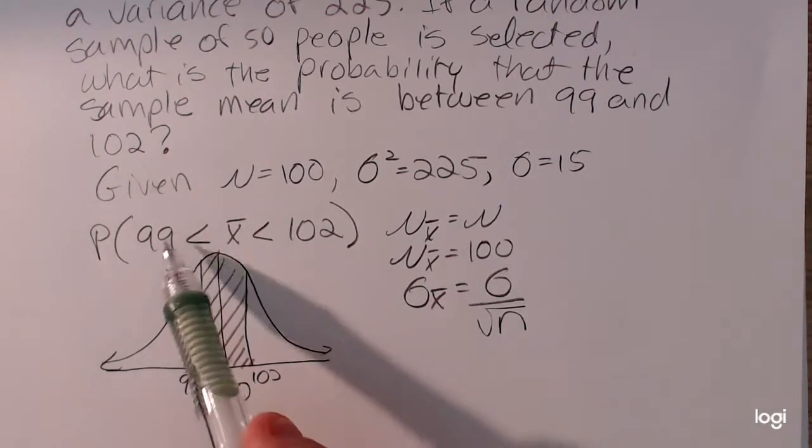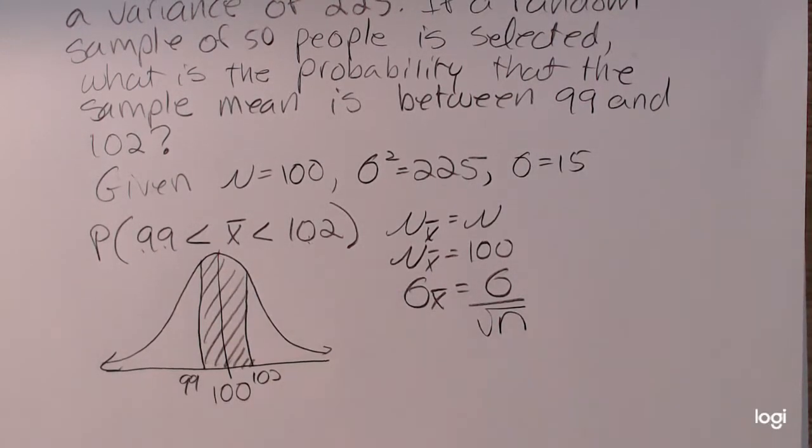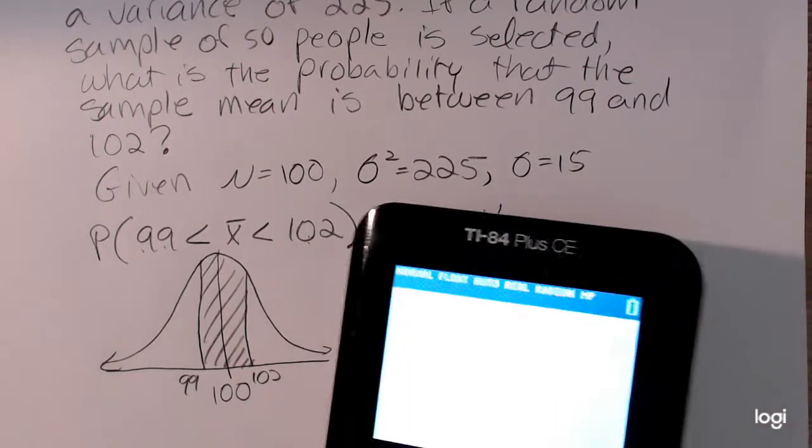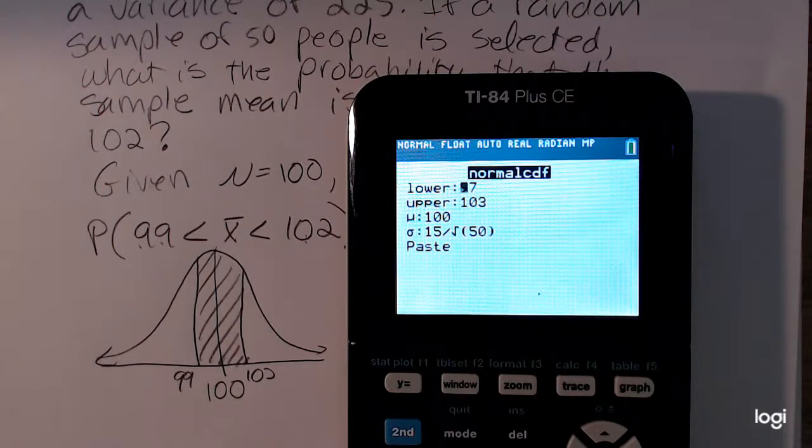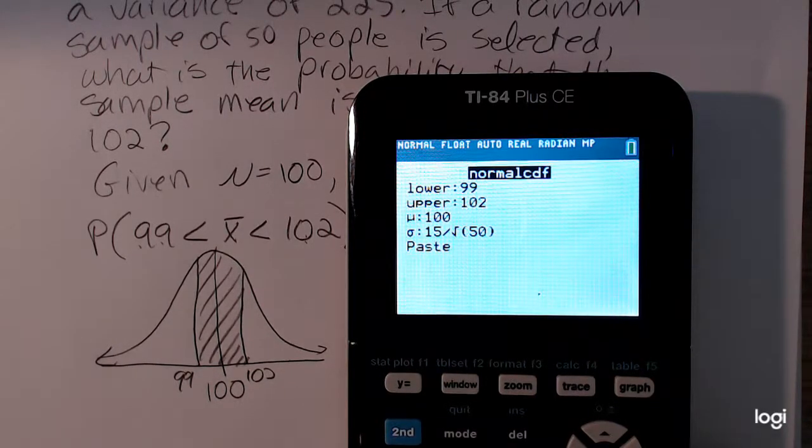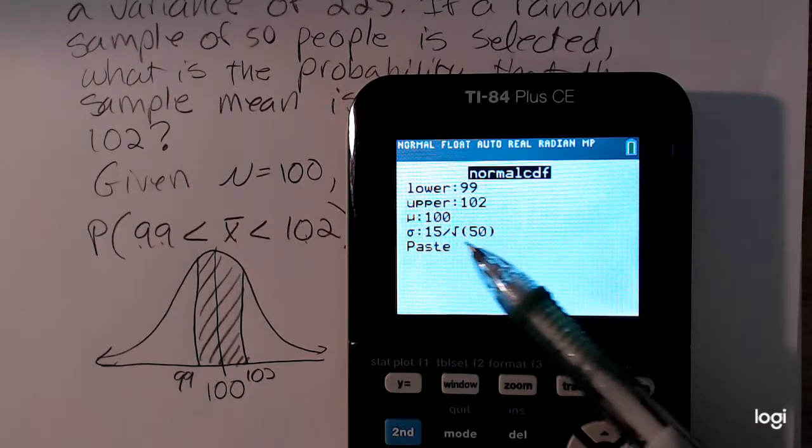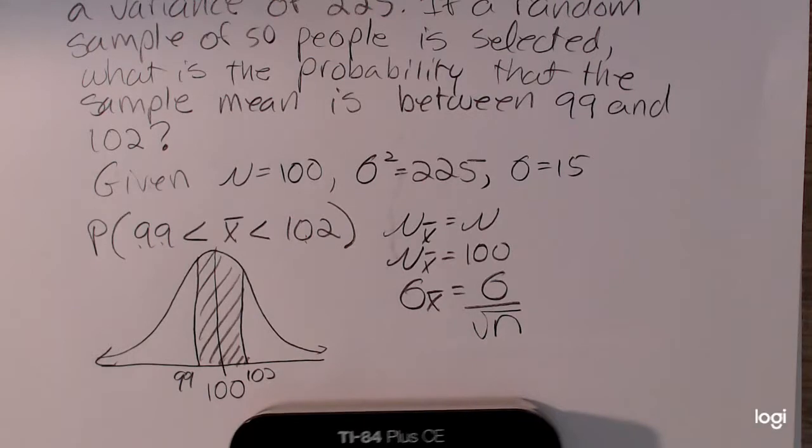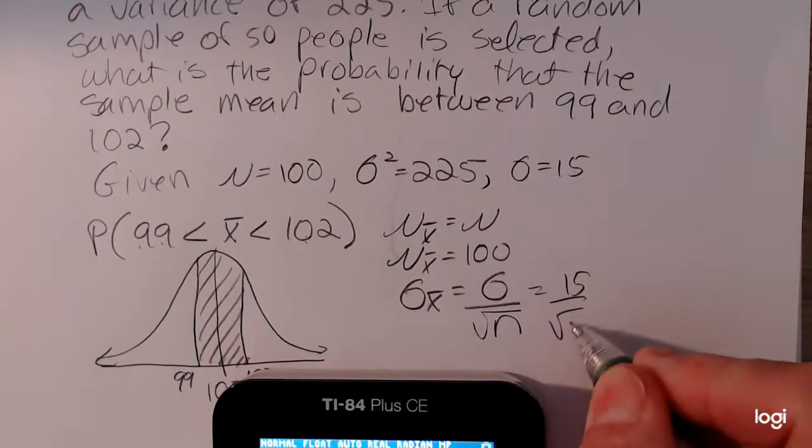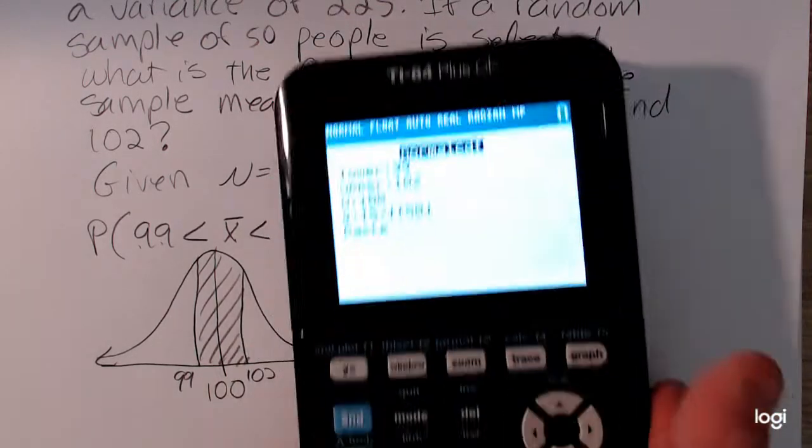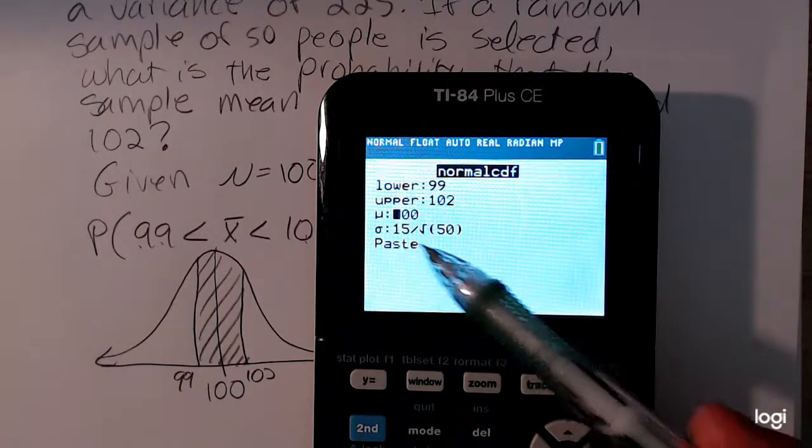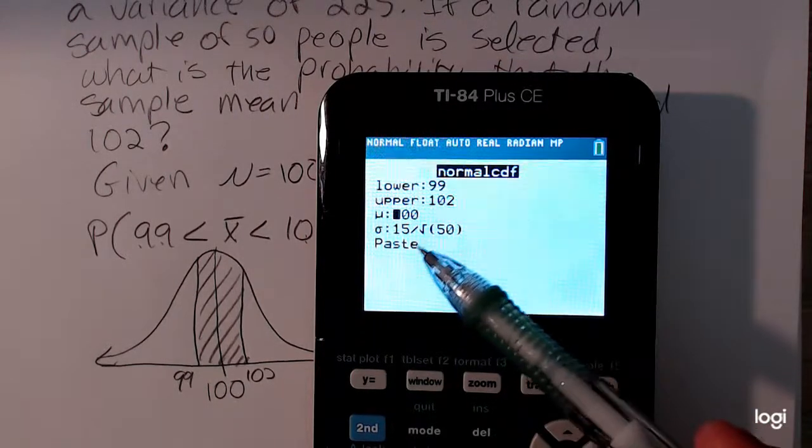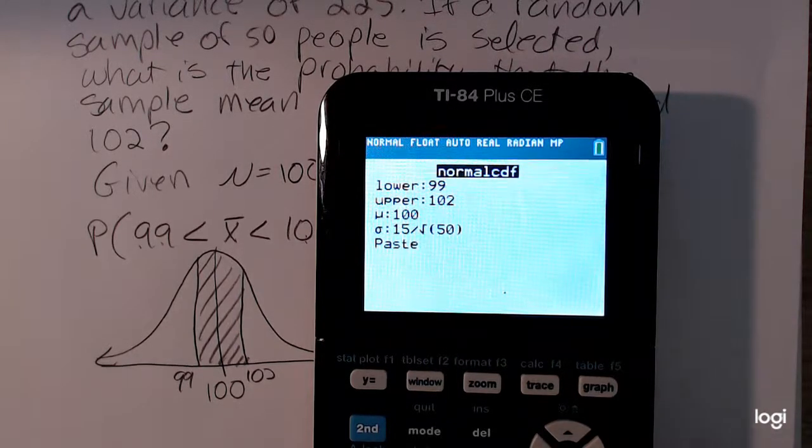Now, rather than standardize each of these endpoints and use the Z table, I'm going to use my calculator. I'm going to my normal CDF function. My lower bound is 99. My upper bound is 102. I'm going to go to mu is 100. And sigma is 15 divided by the square root of 50. I could have found 15 divided by the square root of 50 here, and rounded to, say, four decimal places, and type that in here. But what's nice about the calculator is that for this part, you can just put in the expression as is. You don't have to do this calculation separately.